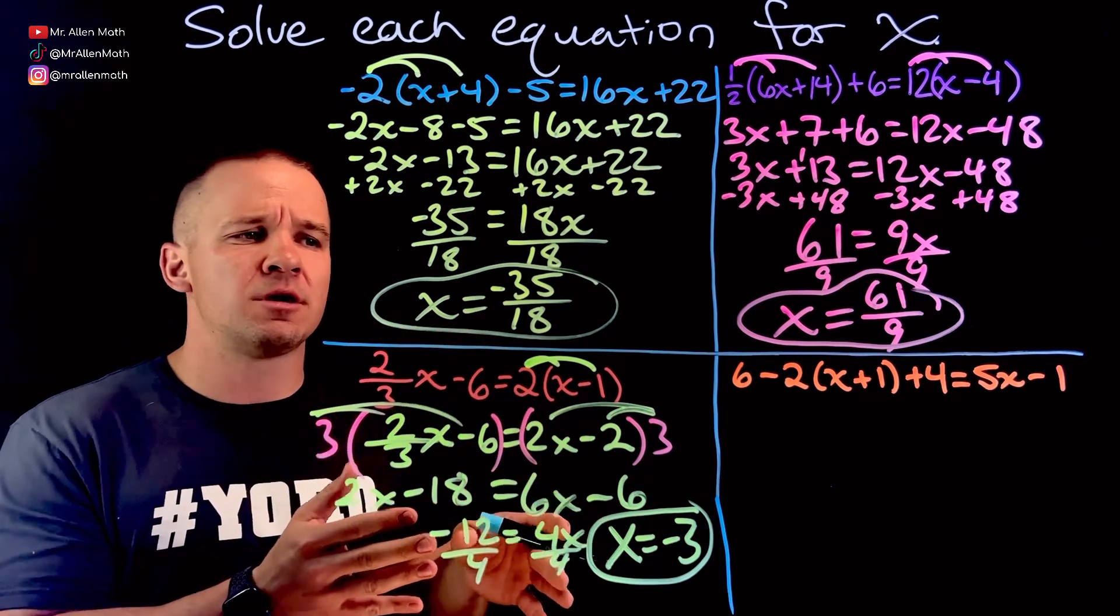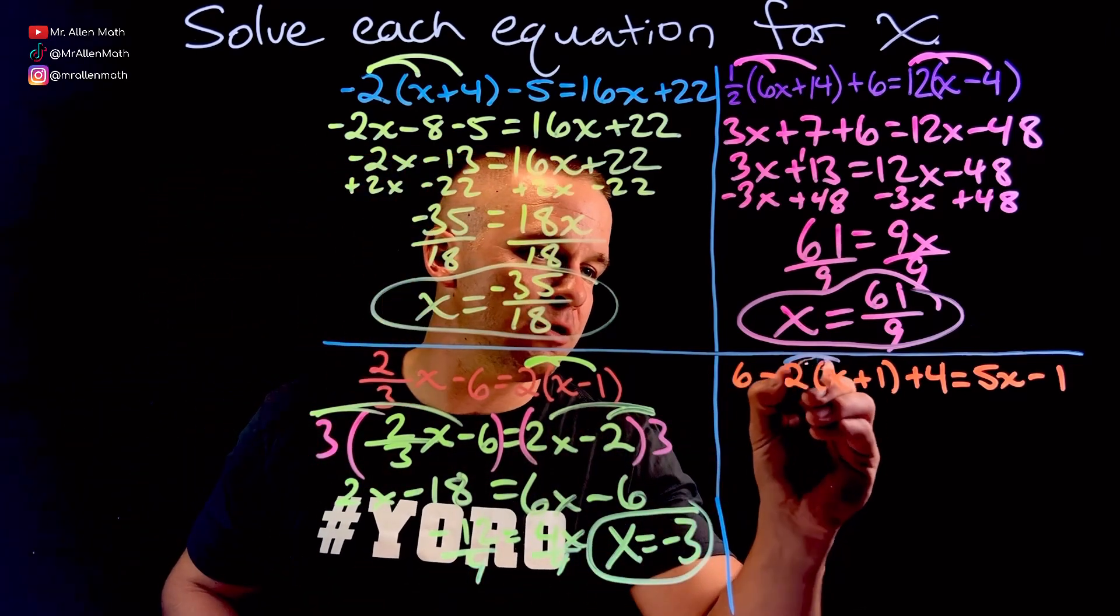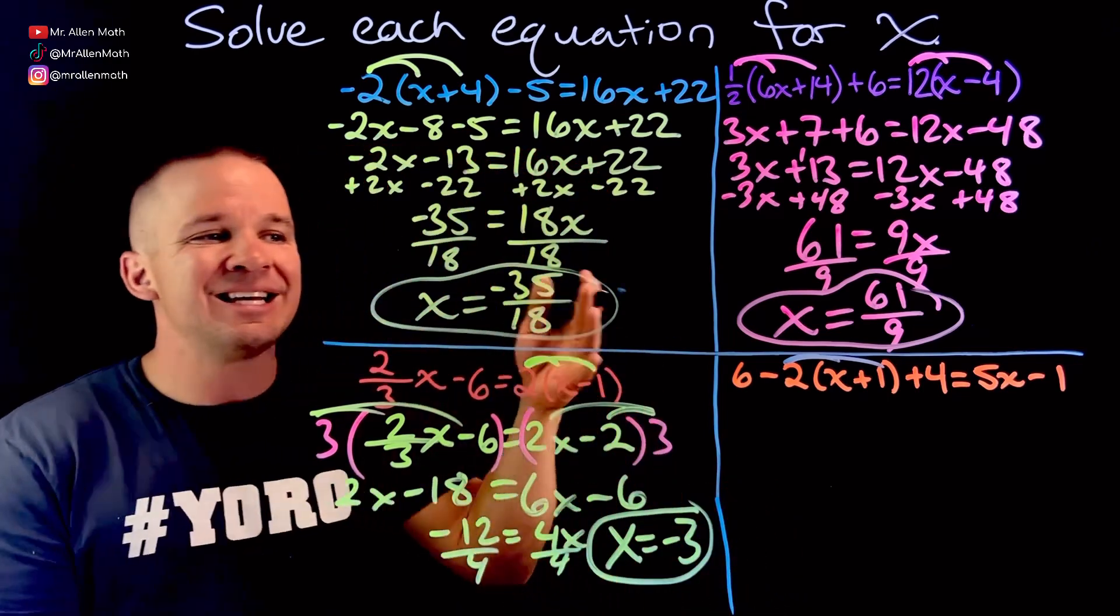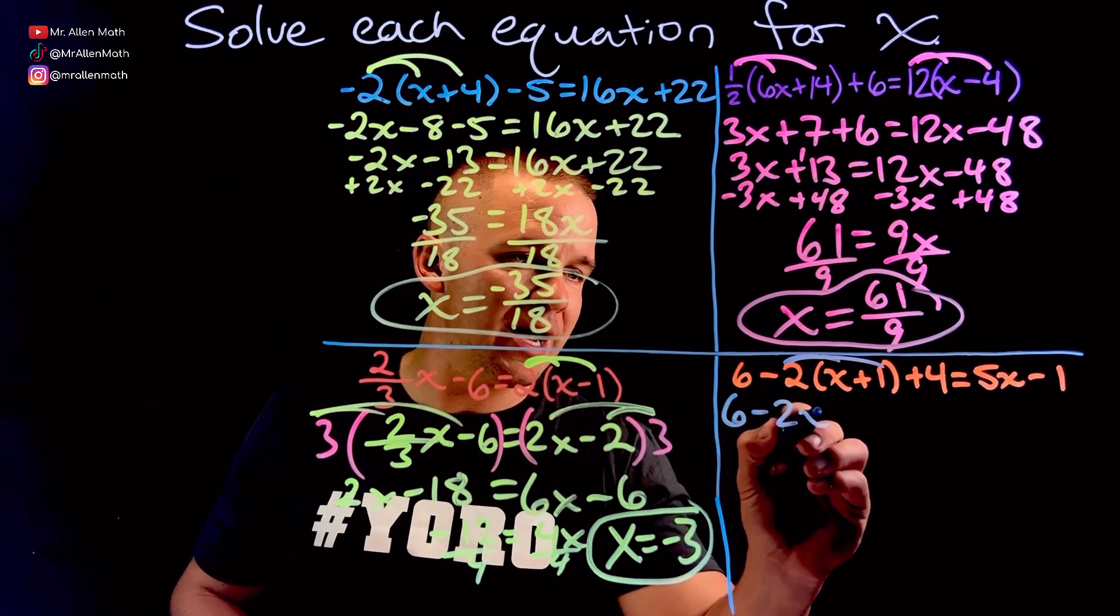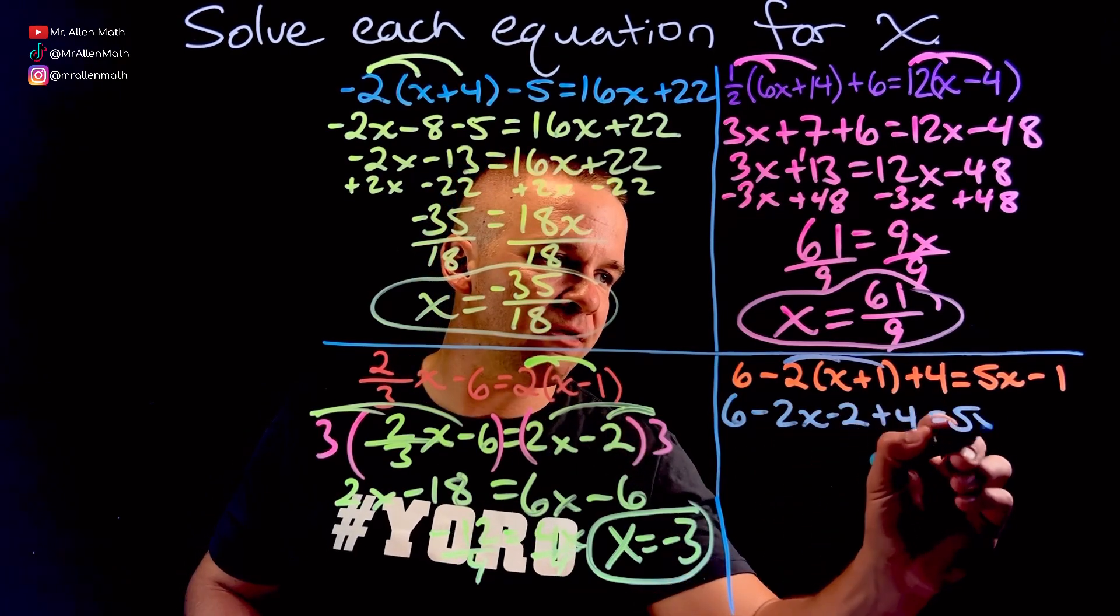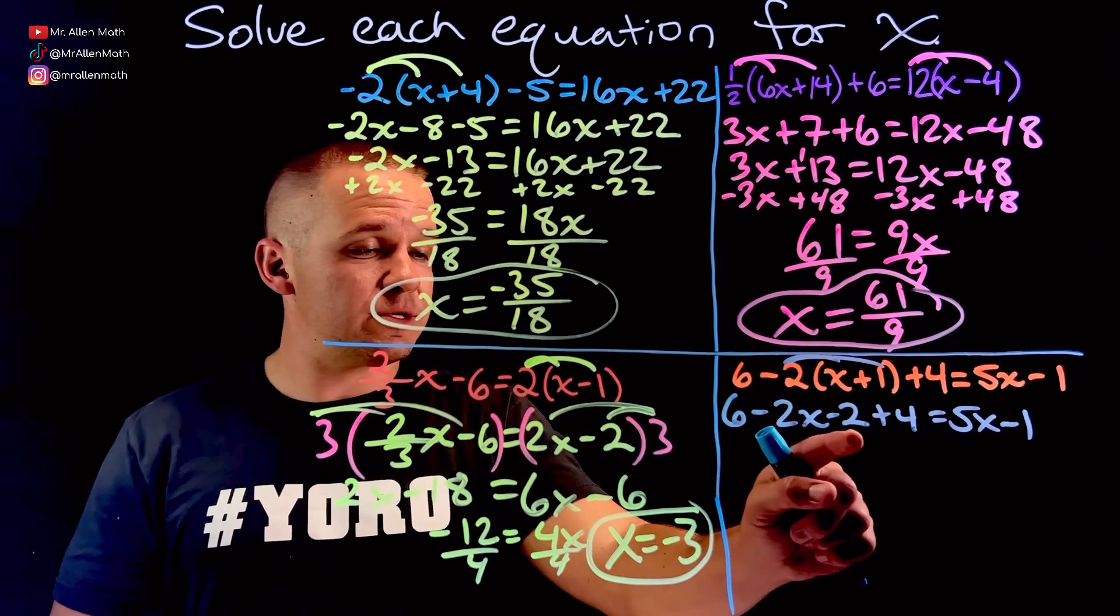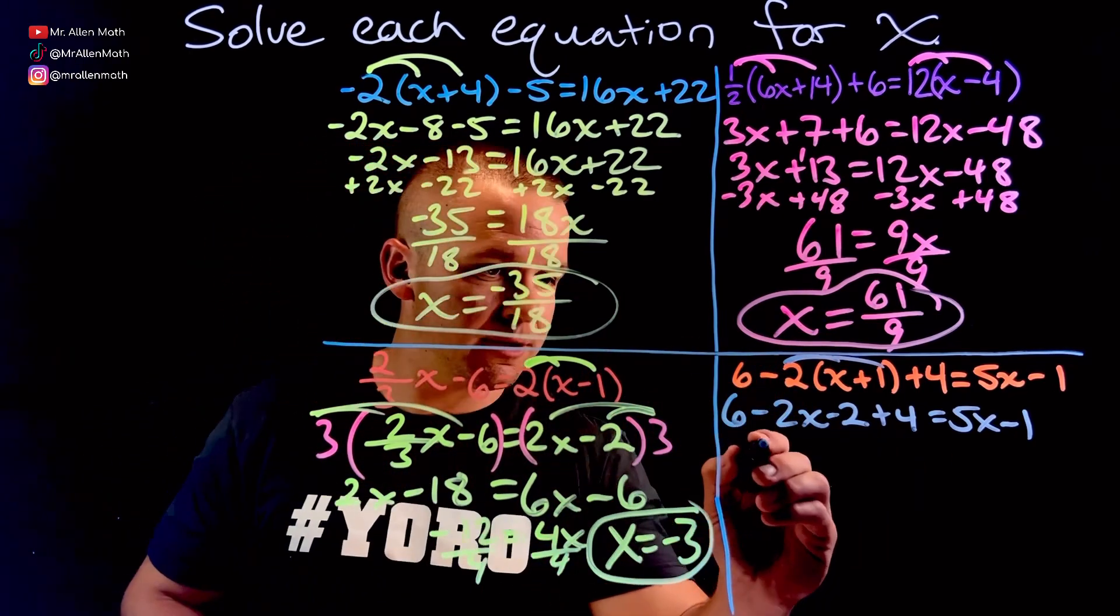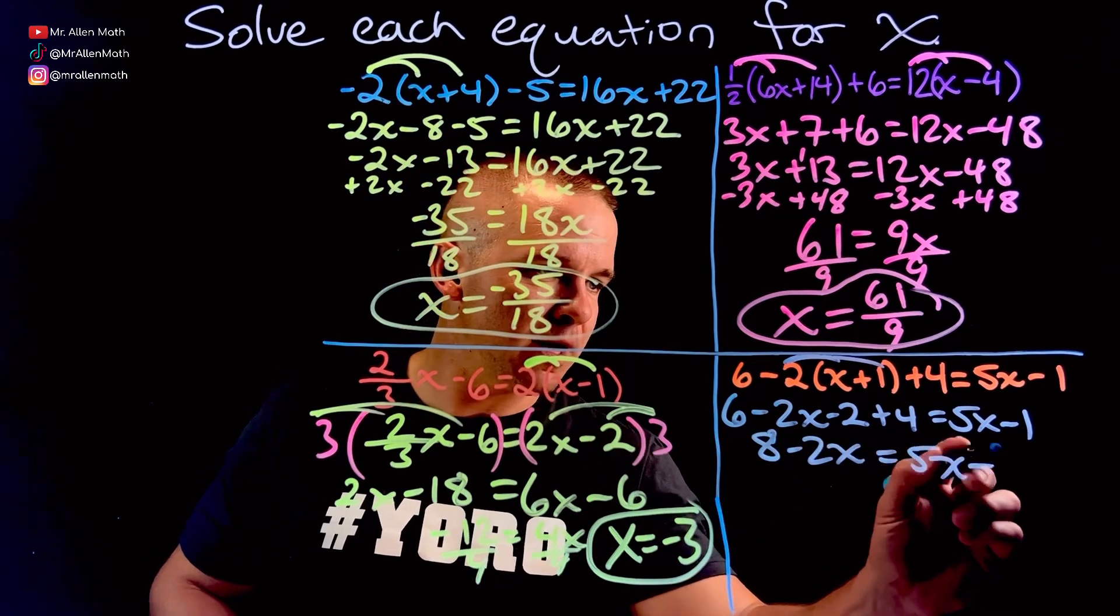Against your dear aunt Sally. Order of operations. Multiplication, division, come before addition, subtraction. So I got to distribute this negative two to both of those guys inside the parentheses. So I'll have six minus two x minus two plus four equals five x minus one. Now I'll combine like terms. We got a few of them. Six minus two is four plus four is eight. So we get eight minus two x equals five x minus one.